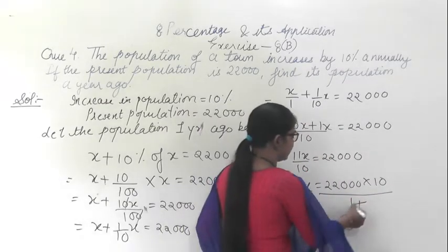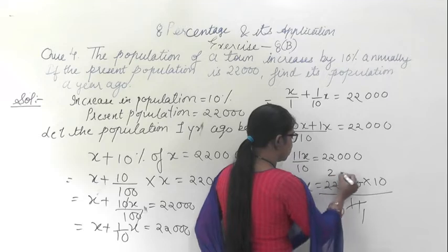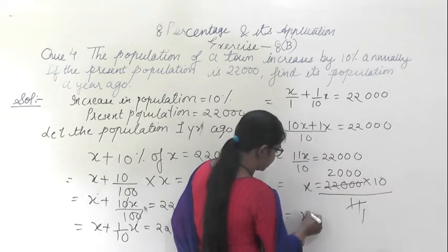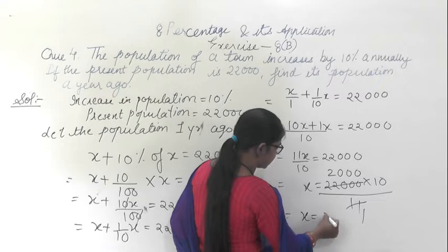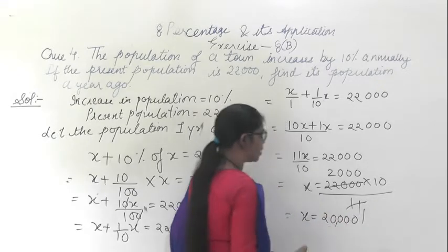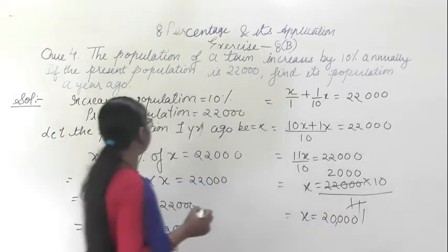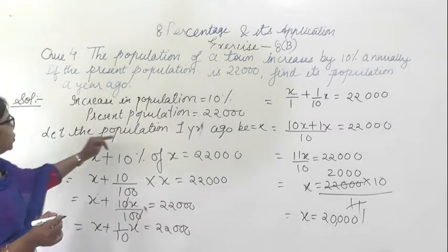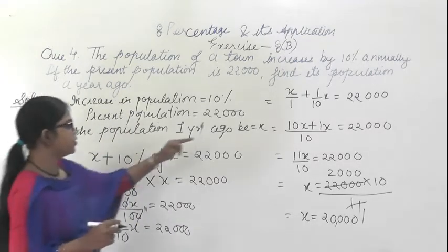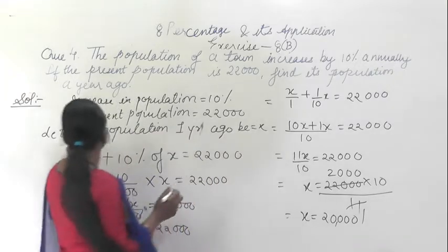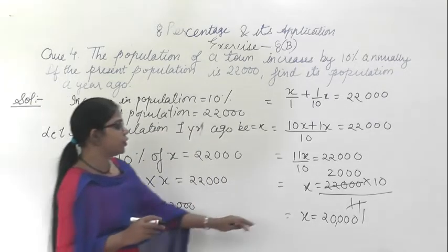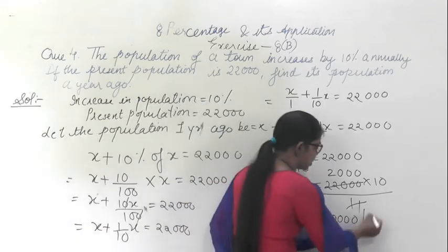Solving 11X equals 220,000, dividing by 11 gives X equals 20,000. So the population one year ago was 20,000. This is the answer.